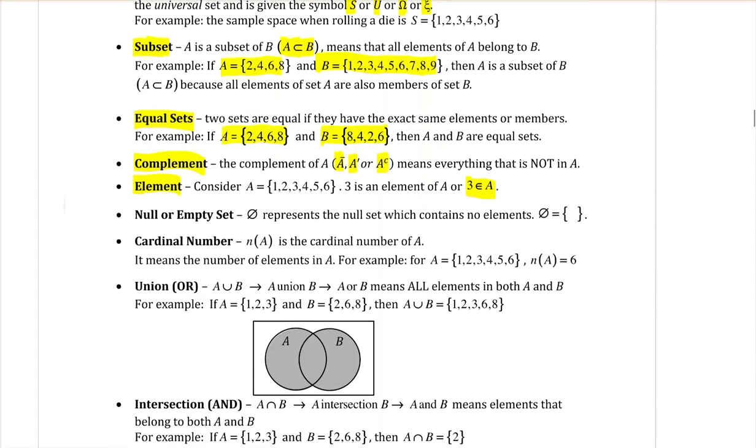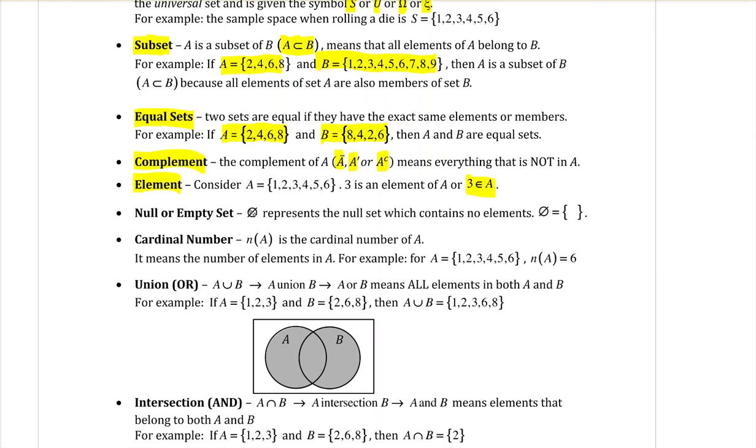Null or empty set is the circle with a line through it, meaning that there is no element in that set. A cardinal number, we've used this before, but you may not have heard it called cardinal number before. It is when we're counting the number of elements that we want.